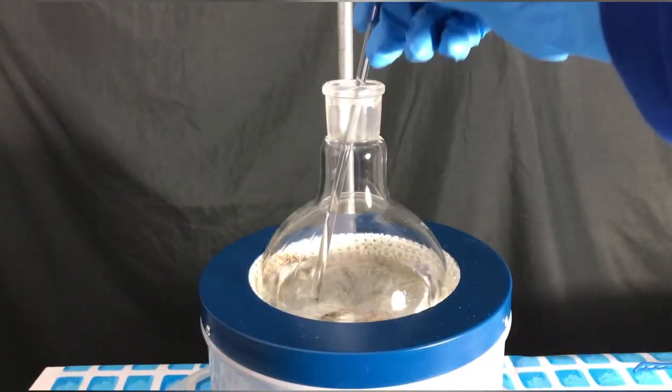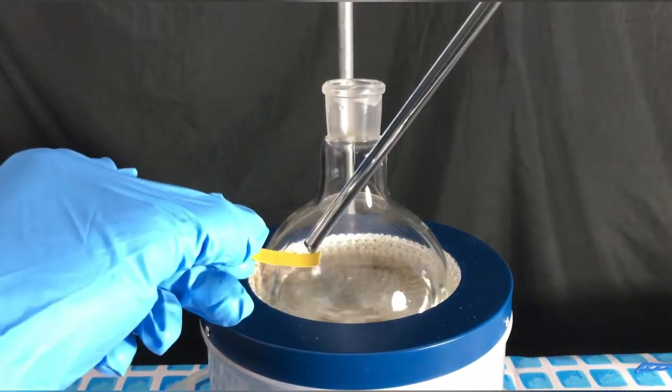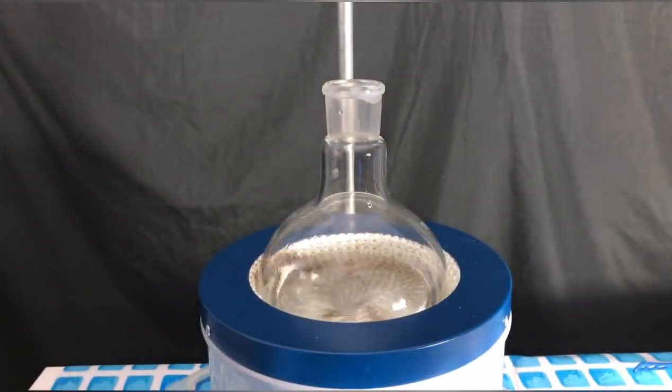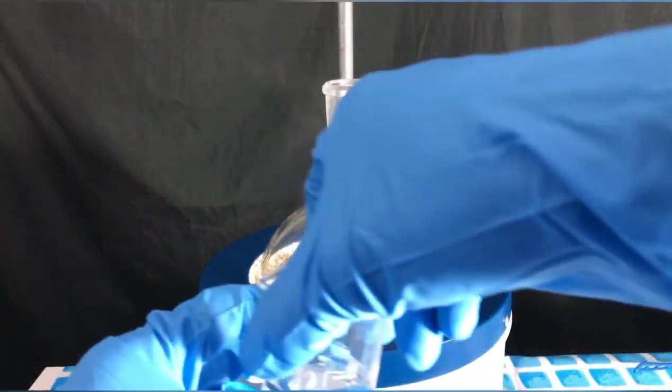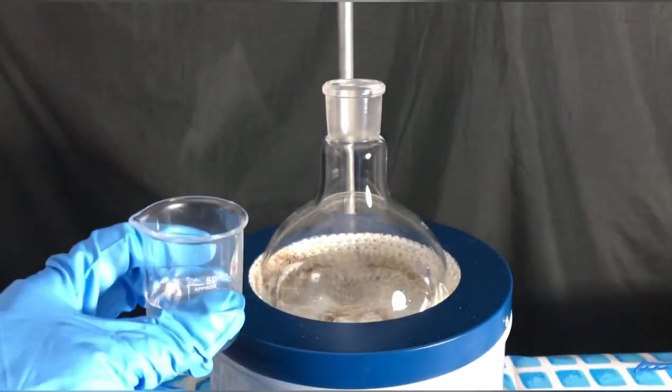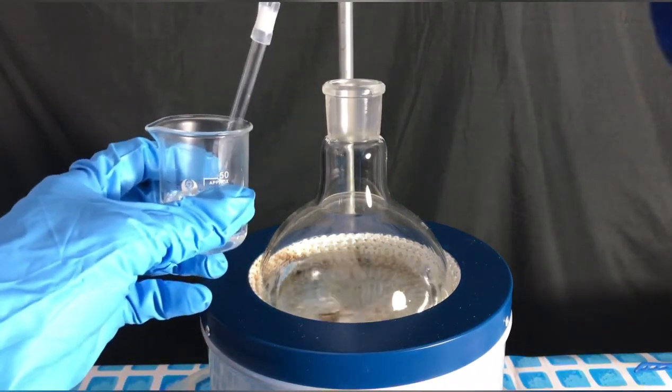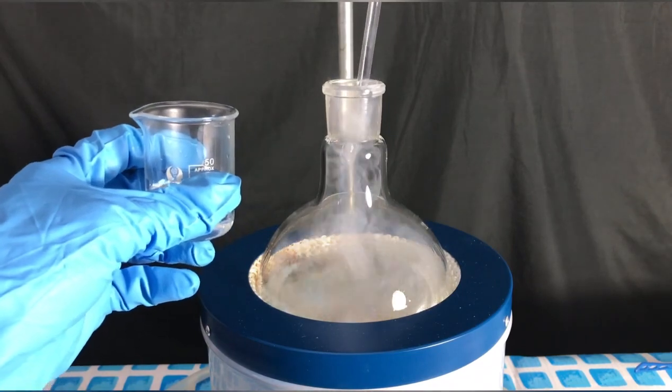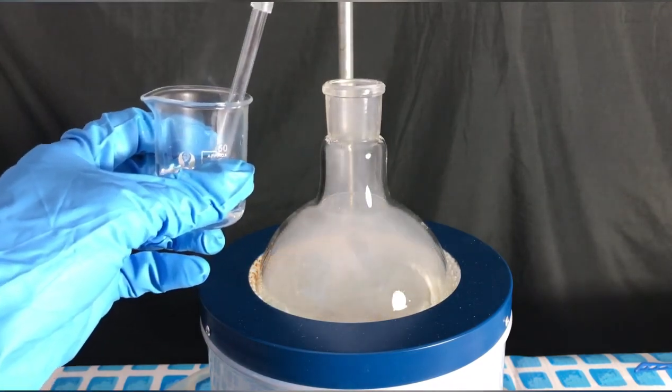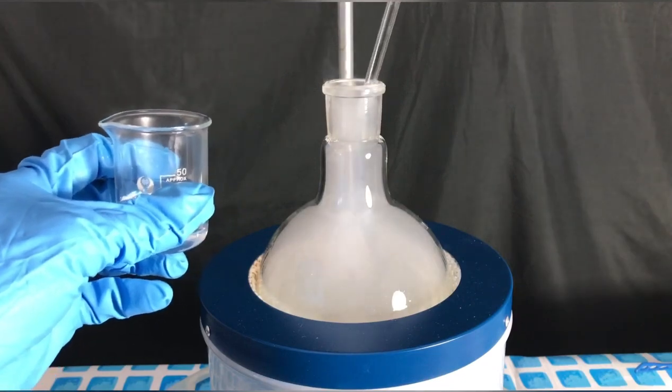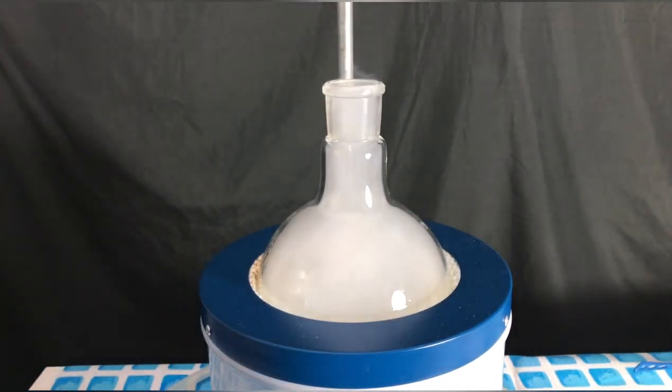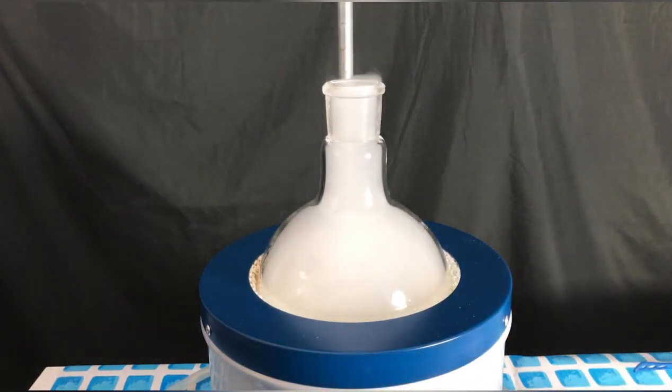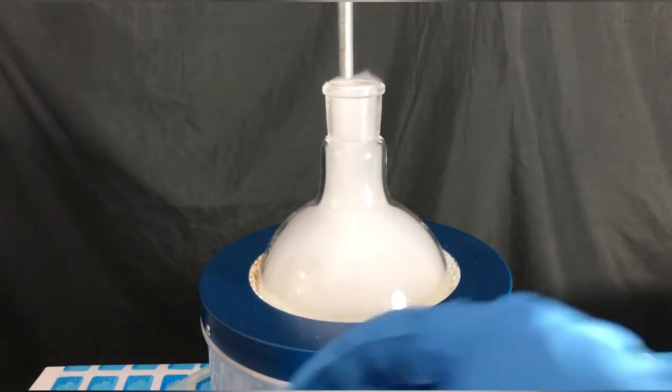Now the solution has to be acidified. The solution is basic because sodium ethoxide will react with water to form sodium hydroxide. The sodium hydroxide will in return react with the barbituric acid forming sodium barbiturate. Because we want barbituric acid, we have to add hydrochloric acid to turn the solution slightly acidic. Sodium ethoxide and sodium barbiturate will react with hydrochloric acid to form sodium chloride and barbituric acid.